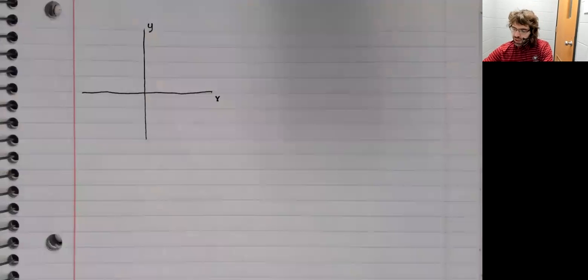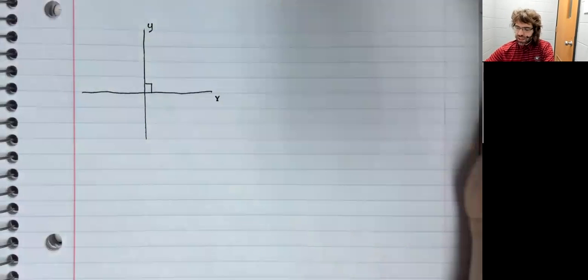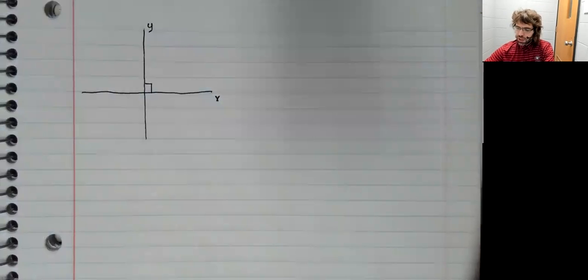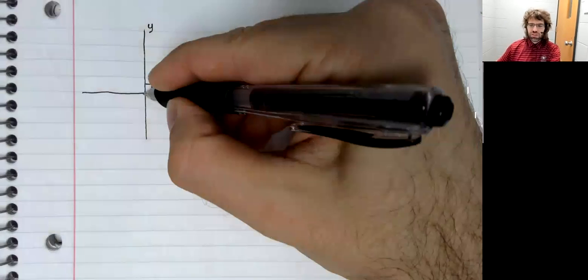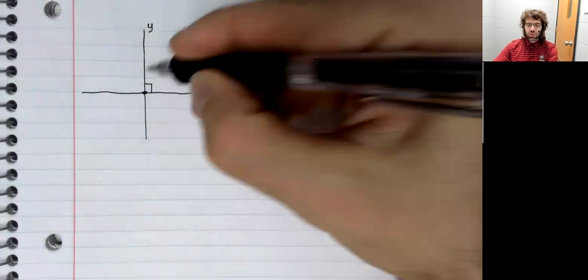We have an x-axis and a y-axis. They intersect each other at a right angle. And that point of intersection is the origin.